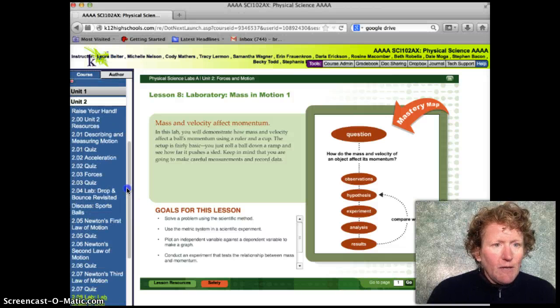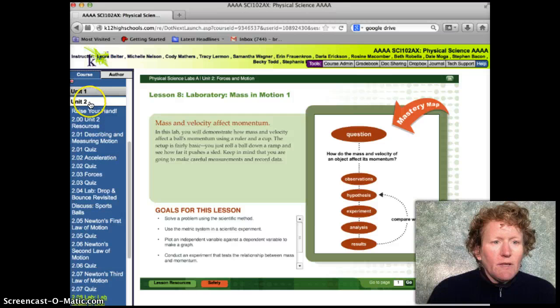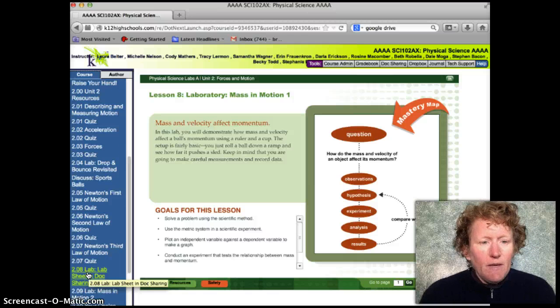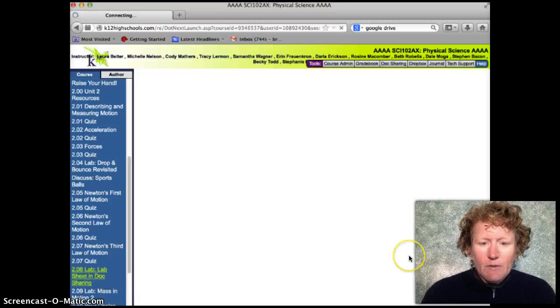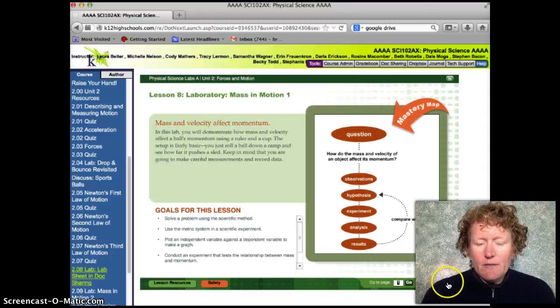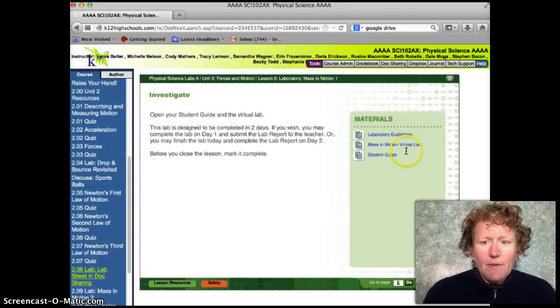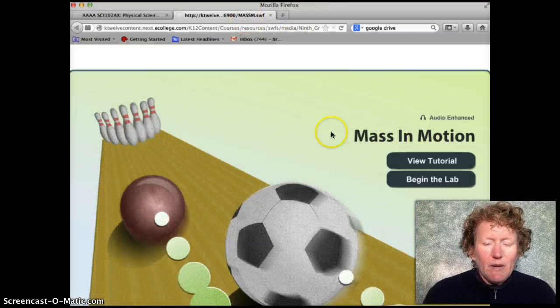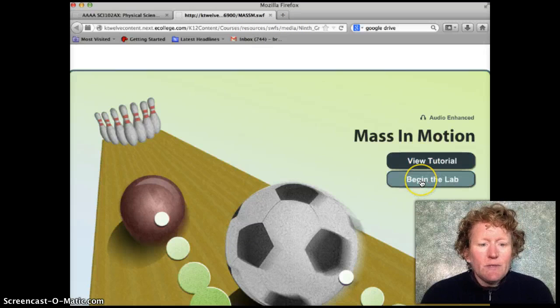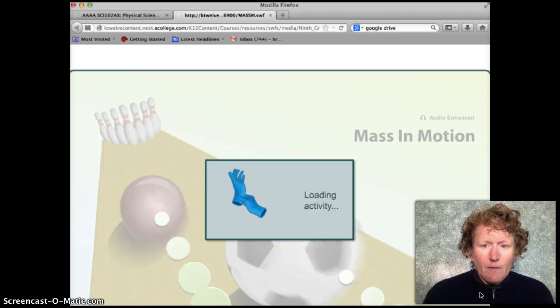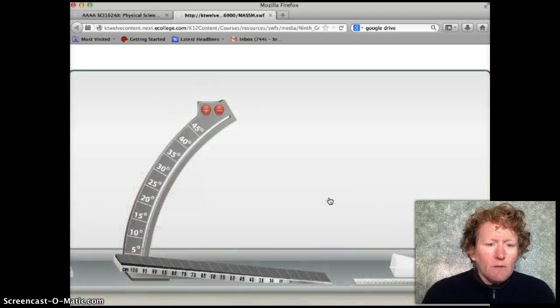So right now I'm in the course page. We're on Unit 2, so I've clicked on the Unit 2 bar. I've scrolled down to see the 2.08 lab. I've clicked on that. Now I'm going to click through to where I can get to the virtual lab. Please do read the goals for the lesson and the explore. Right here it says Mass in Motion Virtual Lab, and I'll see a new tab come up on my browser. You can view the tutorial. I'm just going to begin the lab.